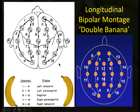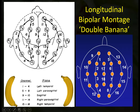In a longitudinal bipolar montage — also called a sequential montage — we represent a sequence of electrode connections comparing one to the next. We start with FP1 compared to F7, F7 to T3, T3 to T5, T5 to O1, then back up to FP1 compared to F3, F3 to C3, C3 to P3, P3 to O1. This is the longitudinal bipolar montage: going in the long axis with adjacent electrodes compared to each other sequentially.